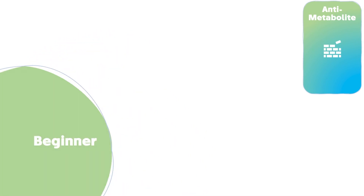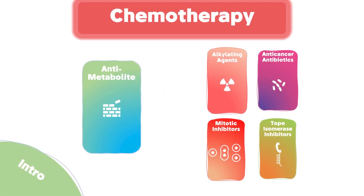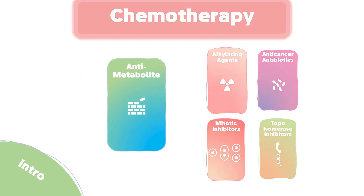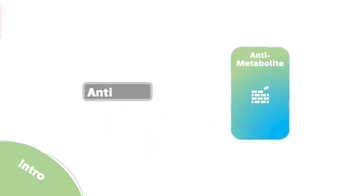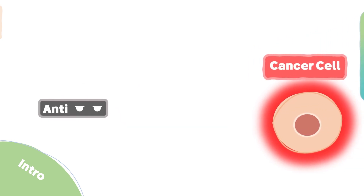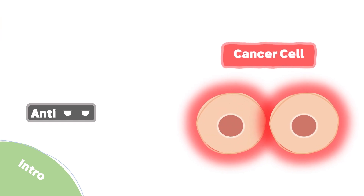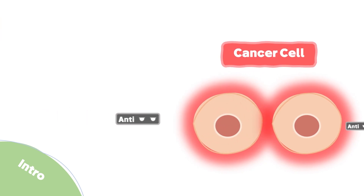Let's start with the beginner level. The anti-metabolites are one of the five families of chemotherapy that are used to treat cancer patients. Cancer cells are mutated cells that are constantly dividing, and the anti-metabolites are highly uptaken by these cells.